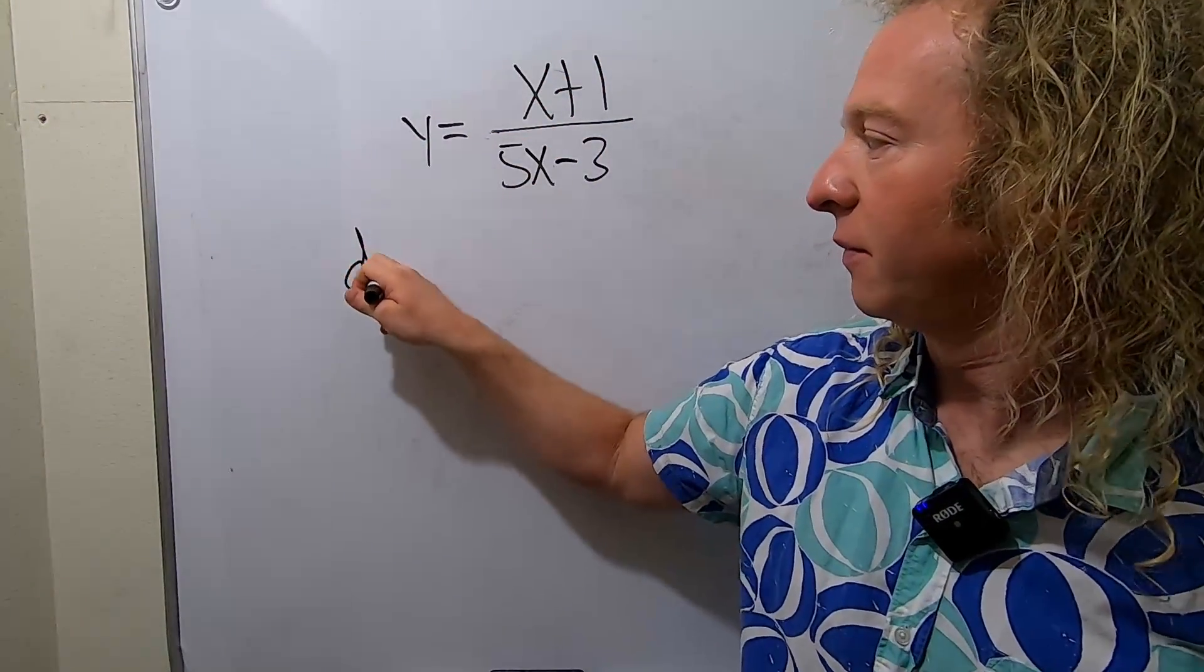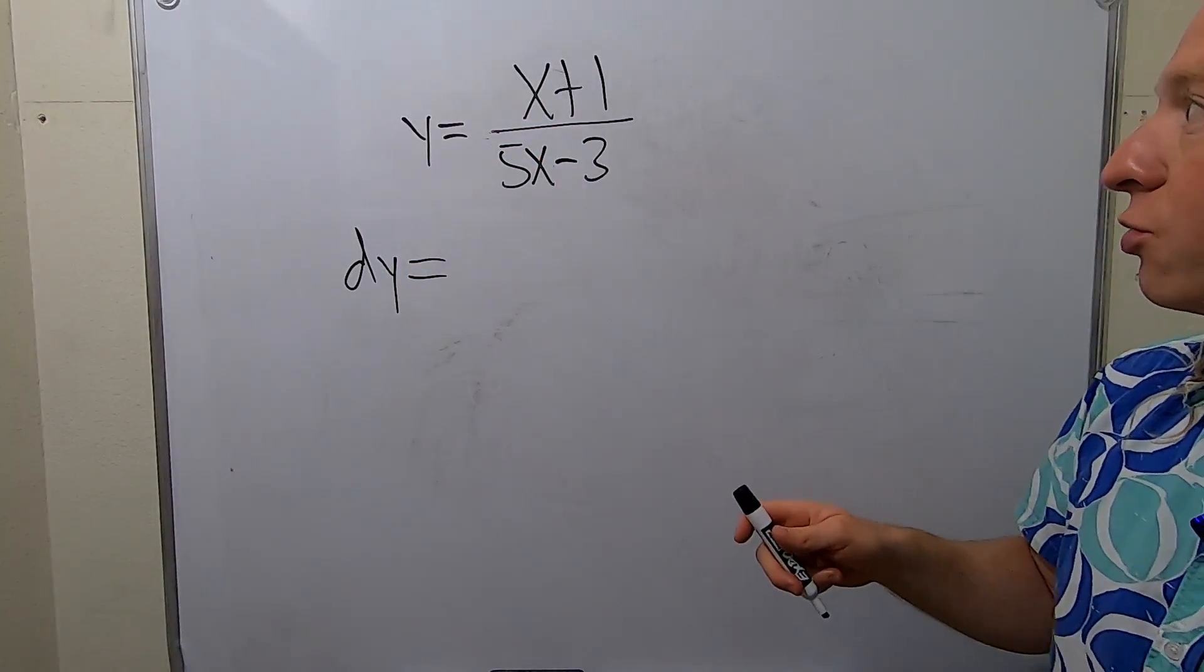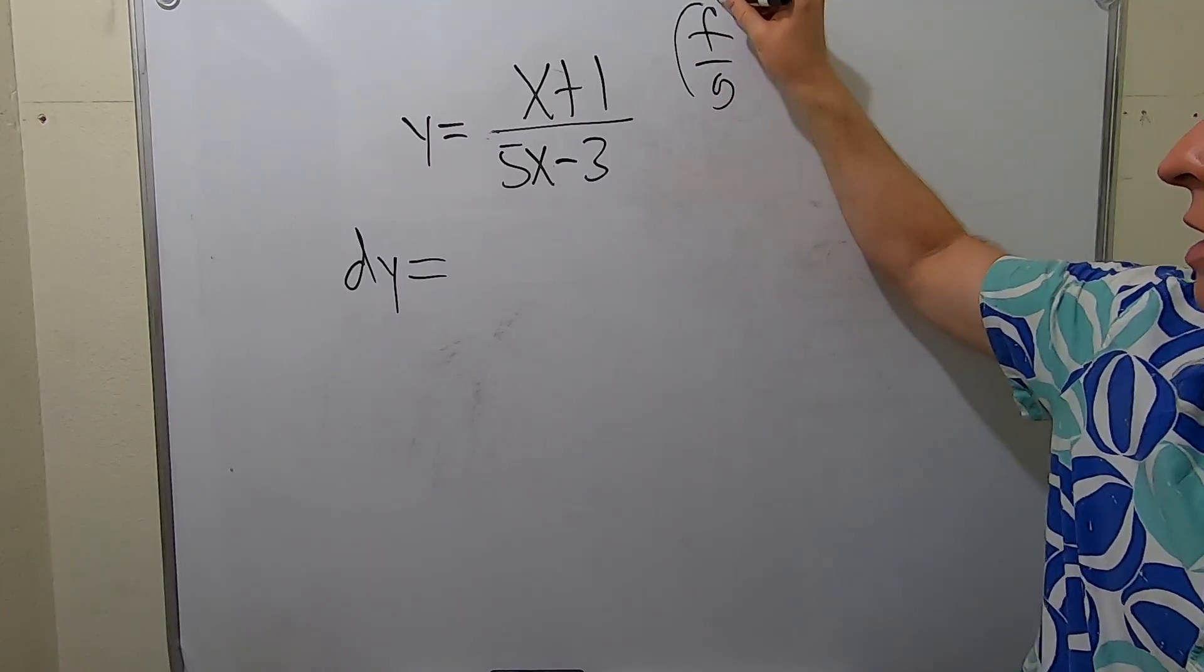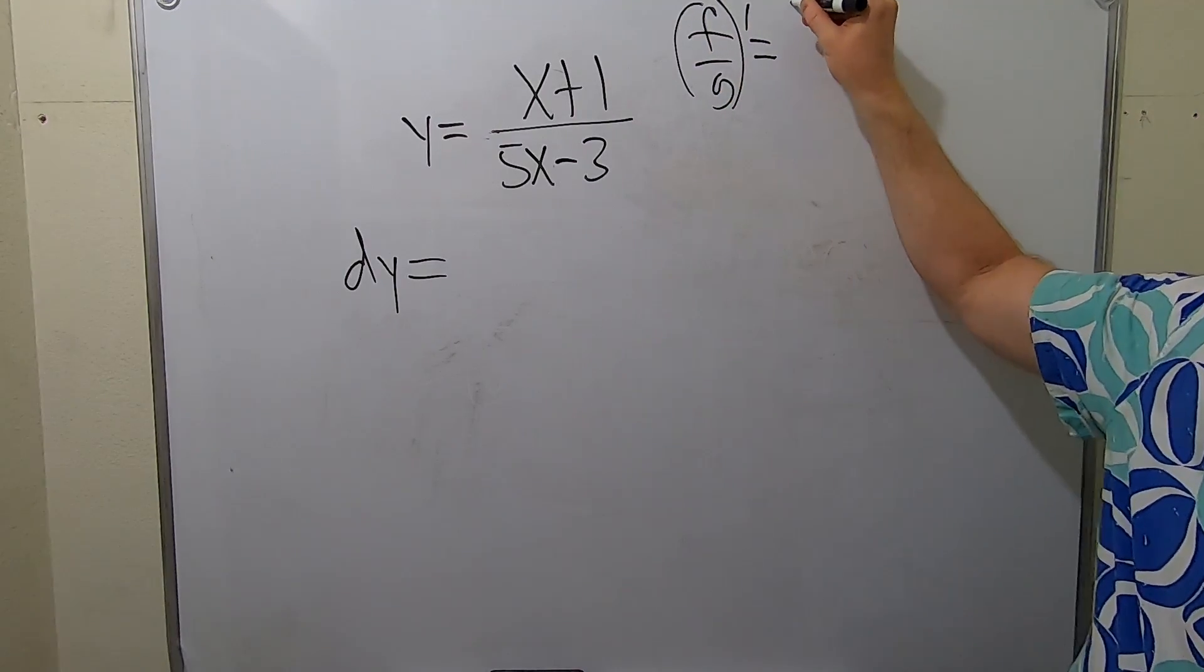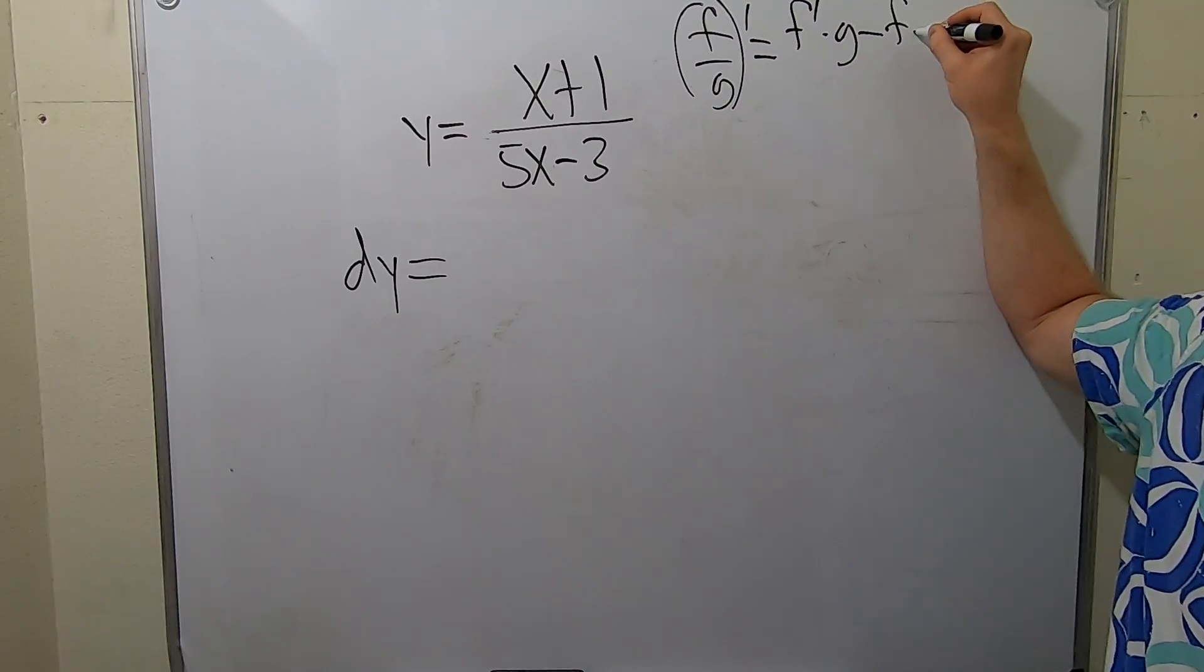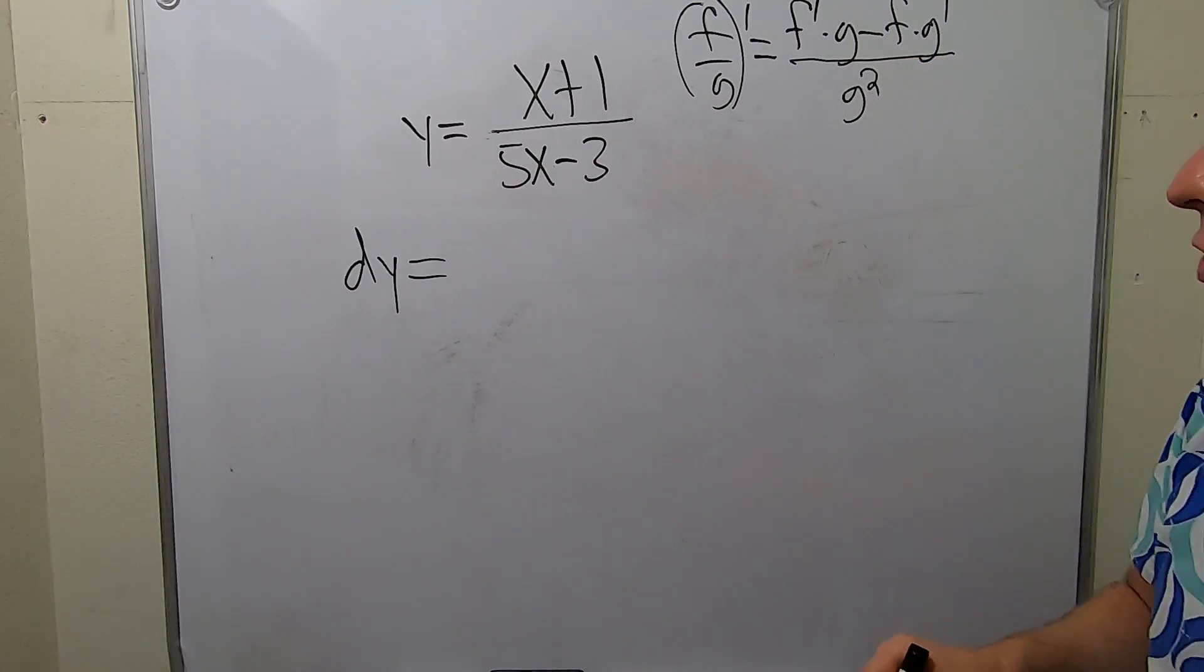So dy - we take this derivative, we're going to use the quotient rule. Recall the quotient rule says if you have two functions f over g prime, it's the derivative of the top times the bottom minus the top times the derivative of the bottom, all over the bottom squared. That is the quotient rule.